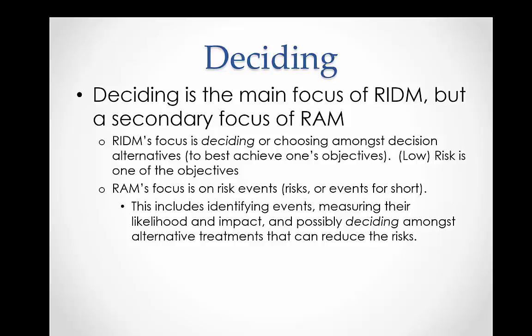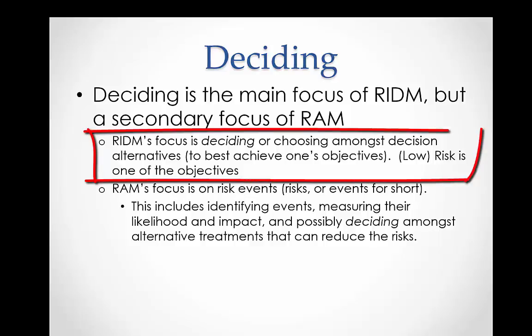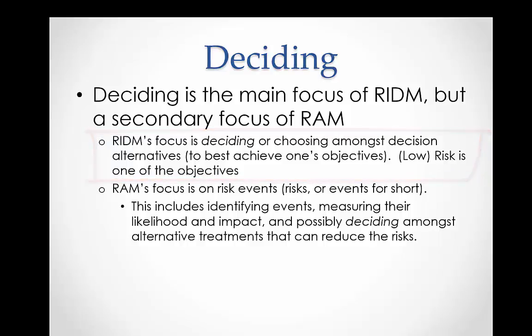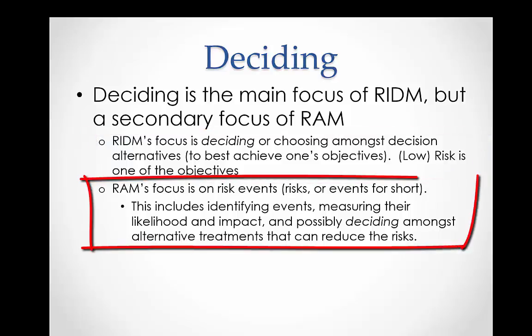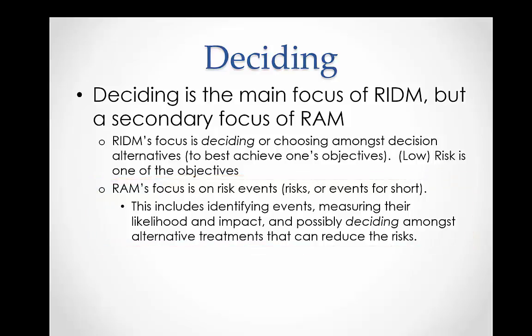Deciding is part of both RIDM and RAM. In risk-informed decision making, we decide what alternatives or combination of alternatives to choose. In risk analysis and management, after evaluating risks, we decide what treatments to implement to reduce risks.